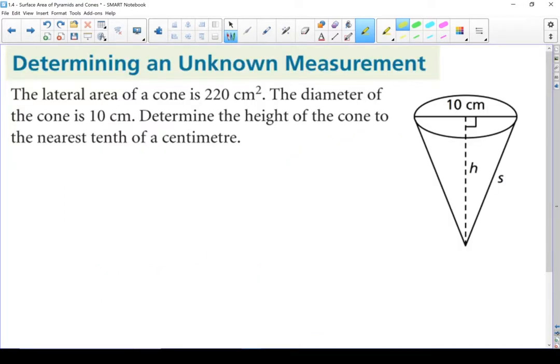Let's take a look at this one. Lateral area of a cone is 220 centimeters squared. The diameter of the cone is 10 centimeters. Determine the height of the cone to the nearest centimeter. So what is it asking? We want the height of the cone. That's this piece right here. What do we know? We know the lateral area of the cone is 220 cm² and the diameter of the cone is 10 centimeters. So in this case it's like we have the answer but we have to work backwards to find a missing measurement.